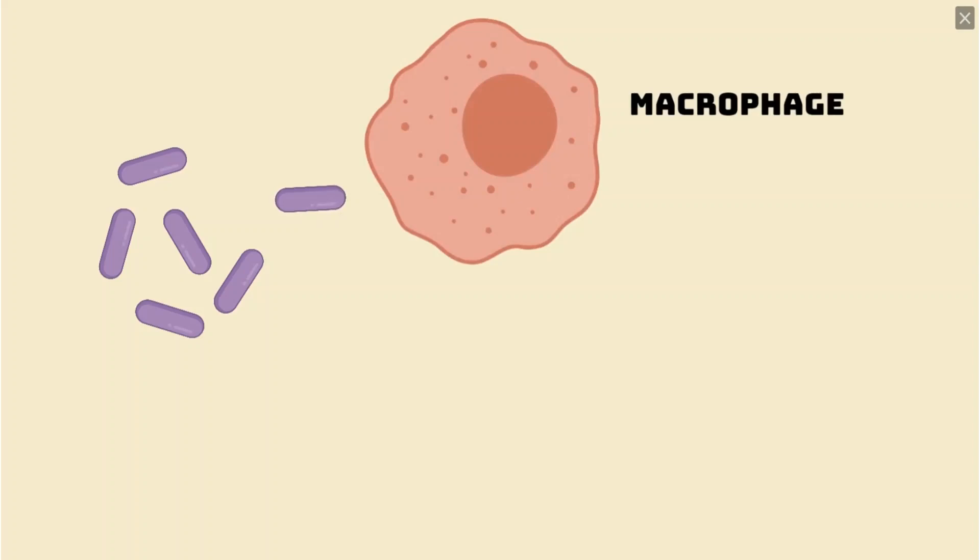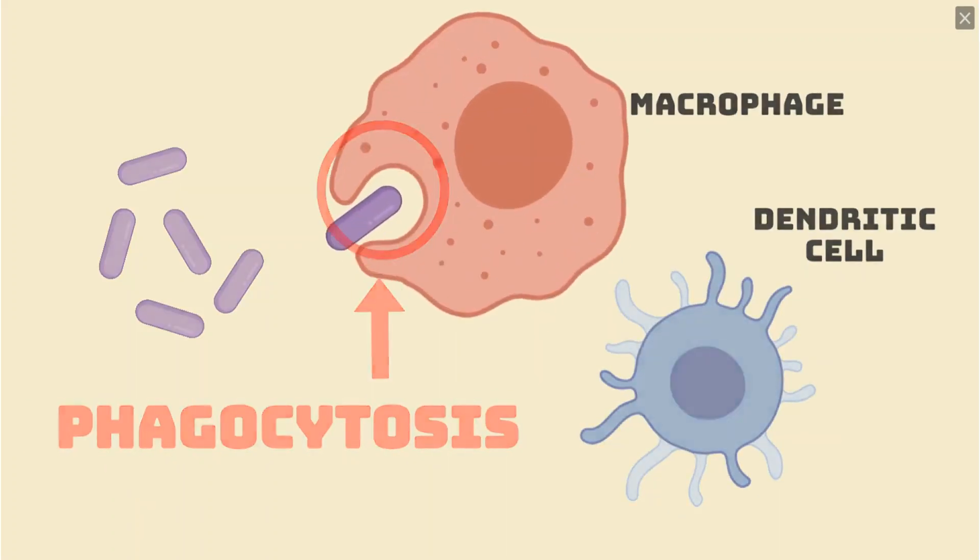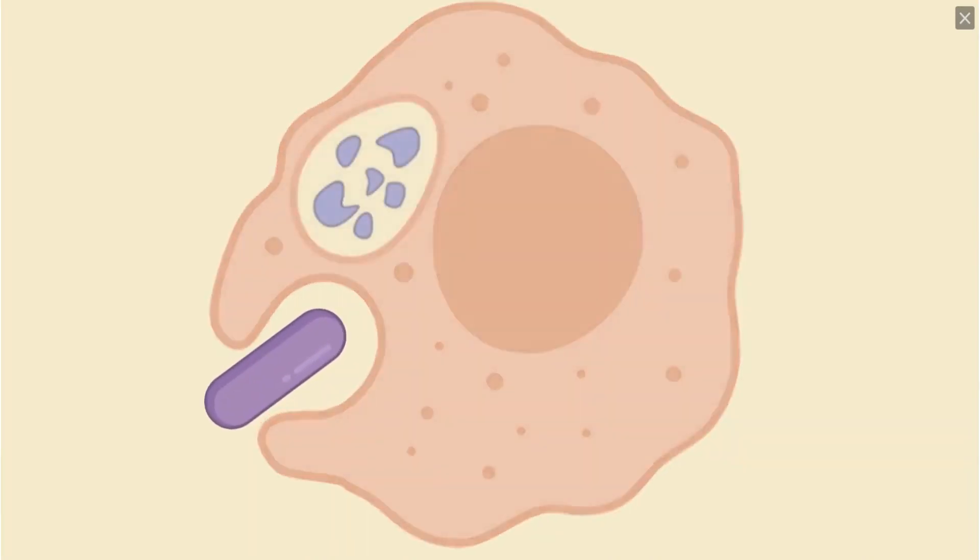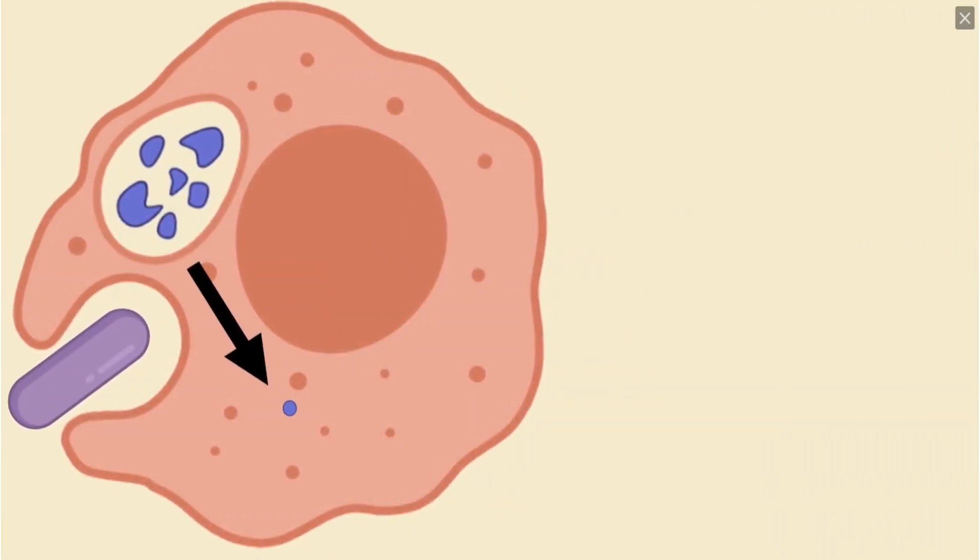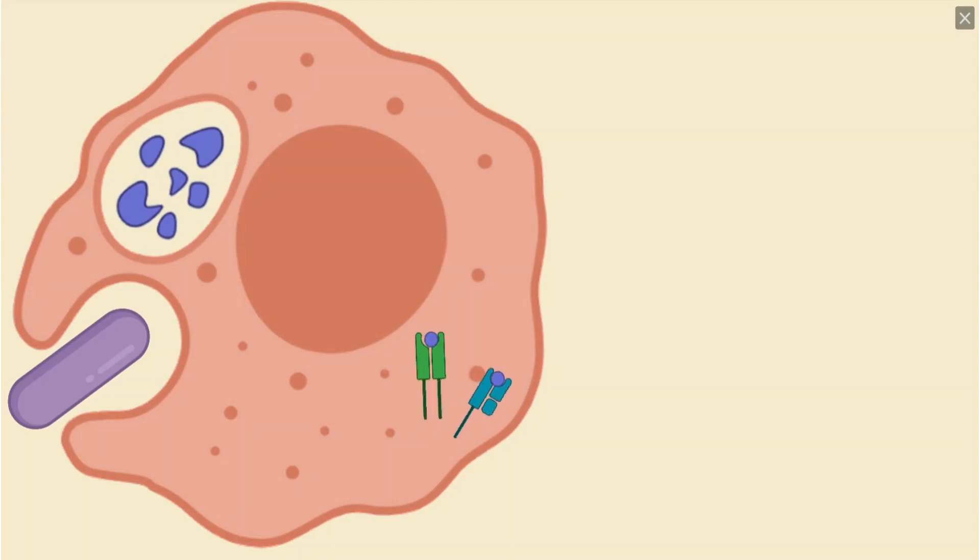It all begins at the site where pathogens are found. Here, cells such as macrophages and dendritic cells eat up the pathogen in a process called phagocytosis. The pathogens are then broken down into small bits, before being loaded onto proteins of the major histocompatibility complex family, or MHC family. These proteins are then presented on the cell surface.